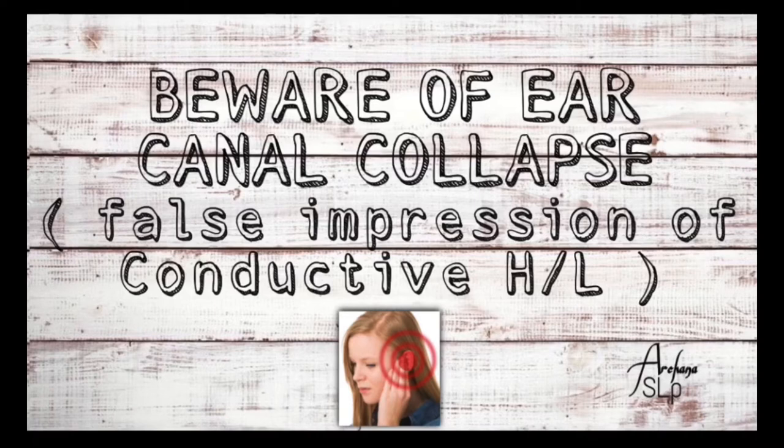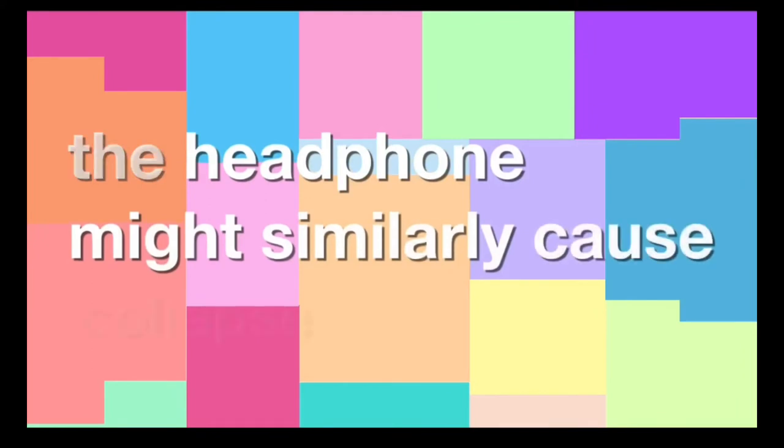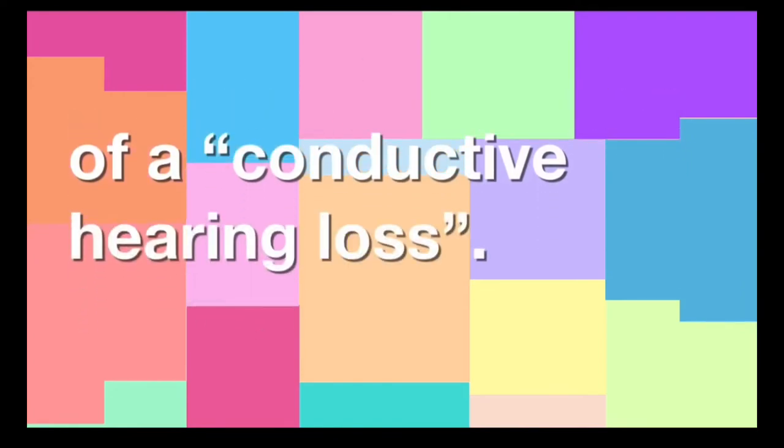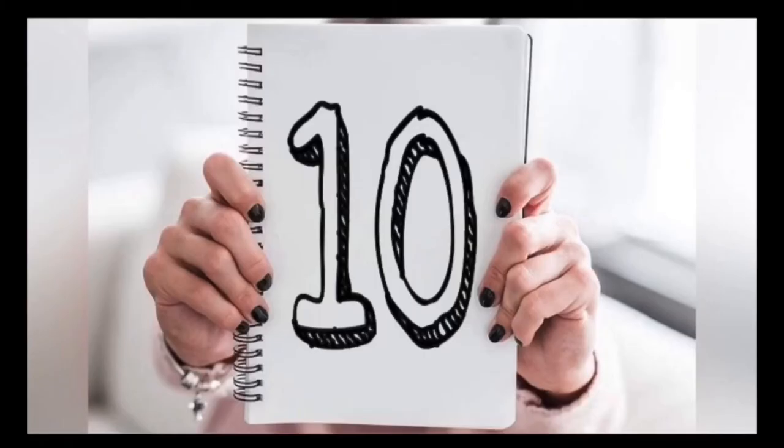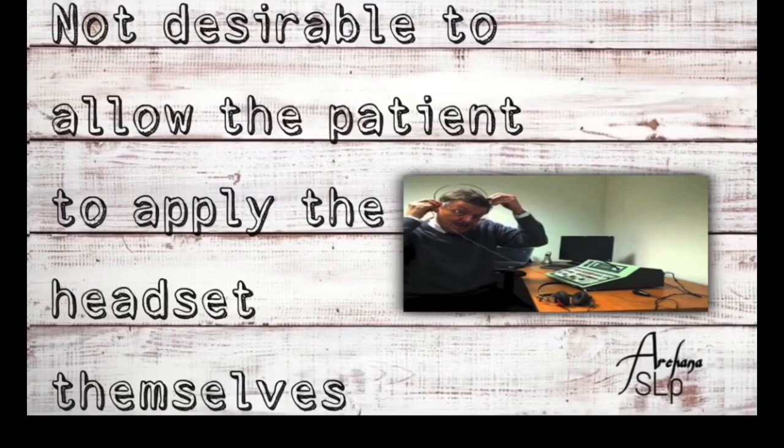Ninth tip: beware of ear canal collapse, which gives a false impression of conductive hearing loss. We should check whether putting pressure on the external ear seems to cause the ear canal to close. This is important because the pressure exerted by the headphone might similarly cause collapse of the ear canal and give a false impression of conductive hearing loss.